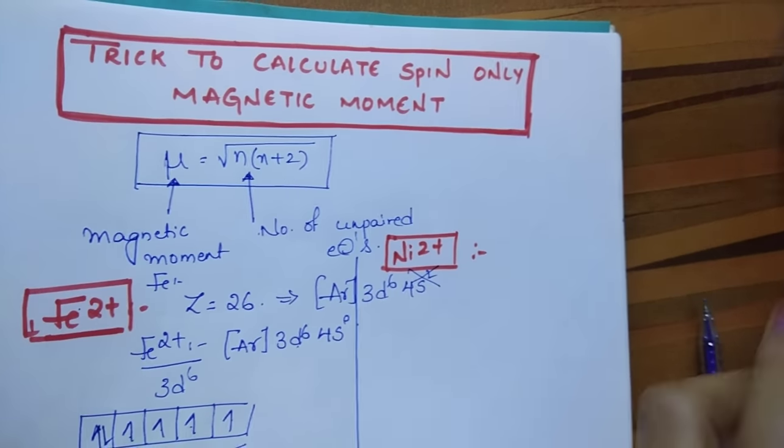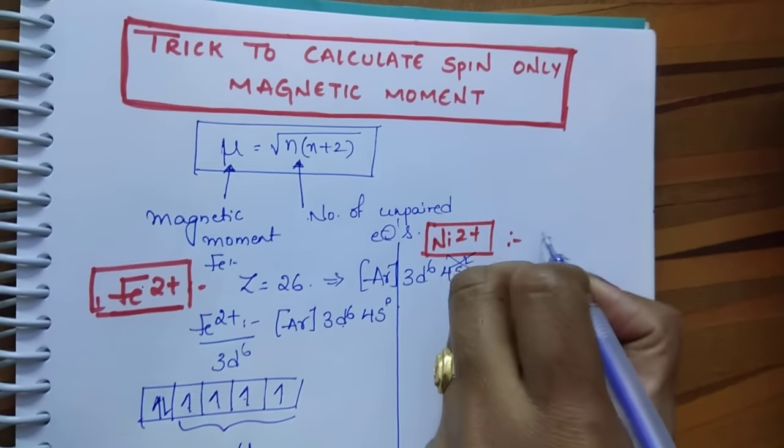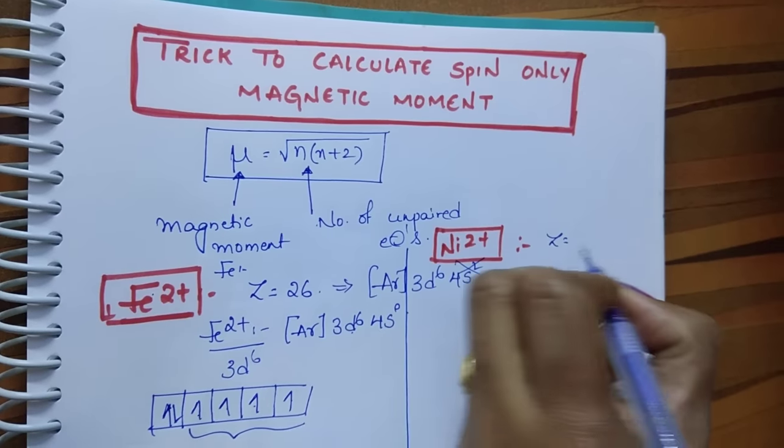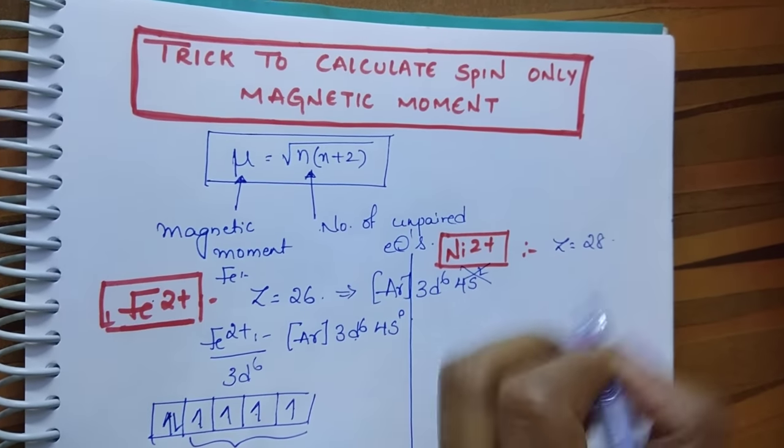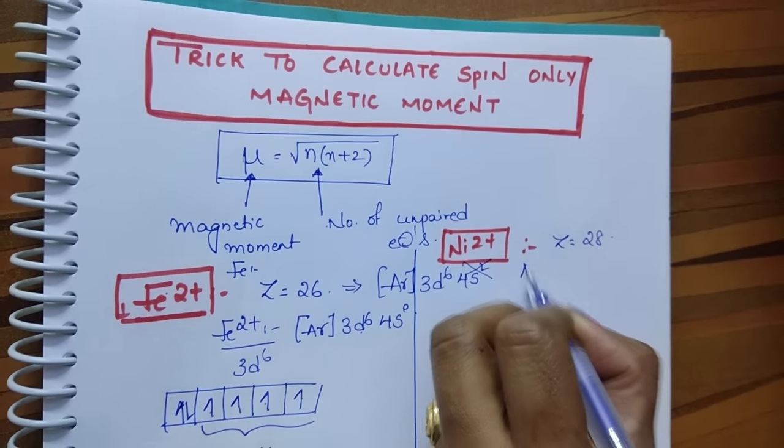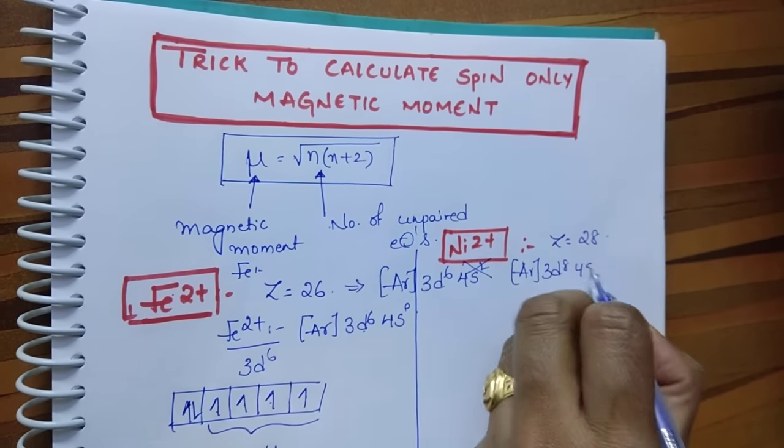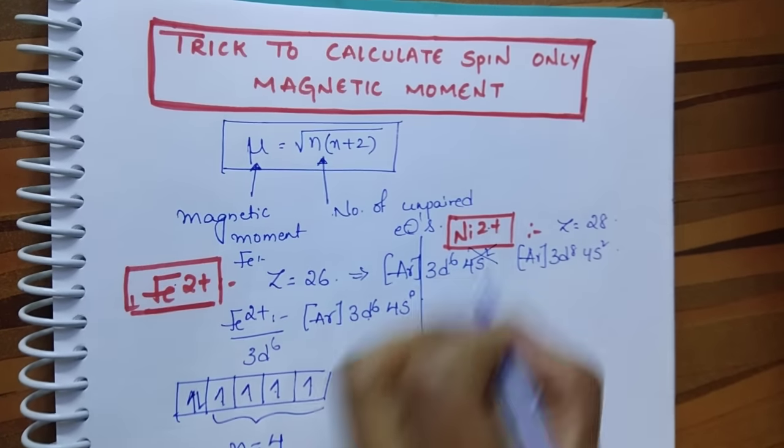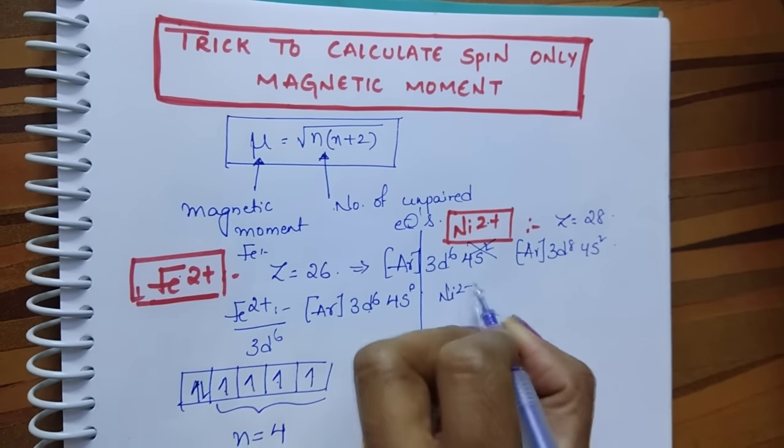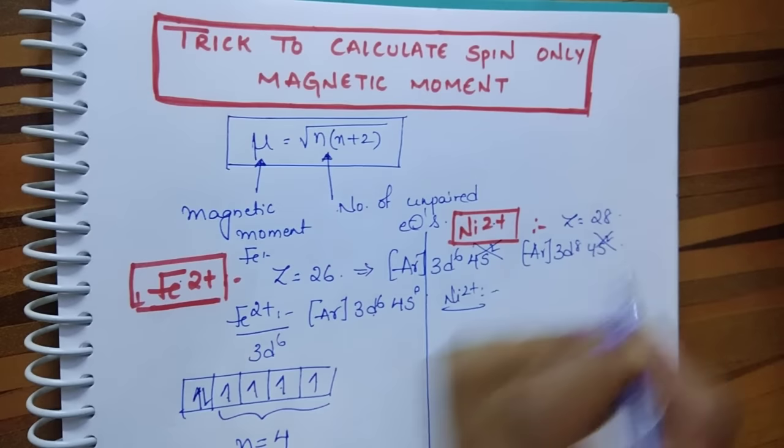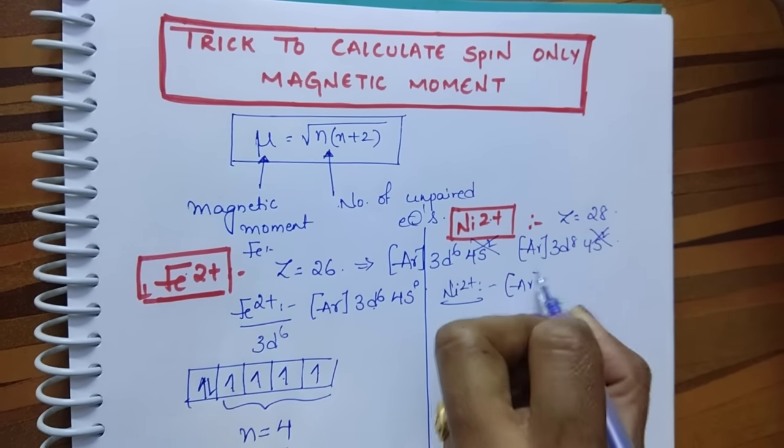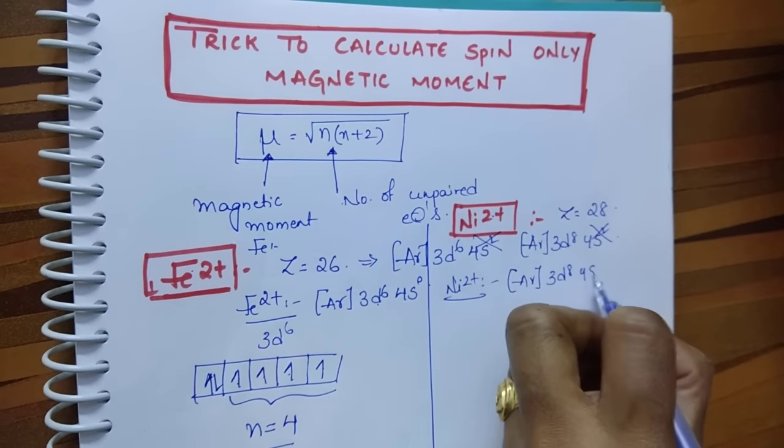Now find for Ni²⁺. What is the atomic number of nickel? Atomic number is 28, and its electronic configuration is Argon 3d⁸ 4s². Here nickel is in +2 state, so remove the 2 electrons. Then you get Argon 3d⁸ 4s⁰.